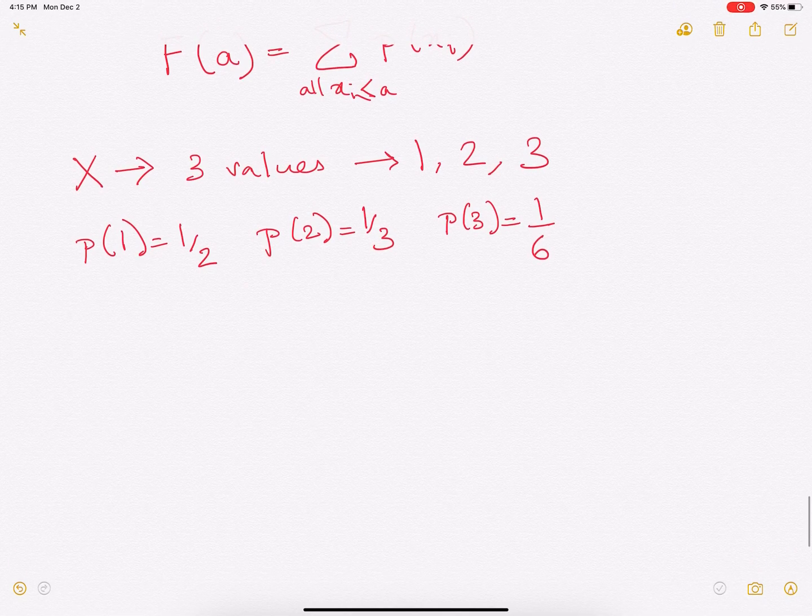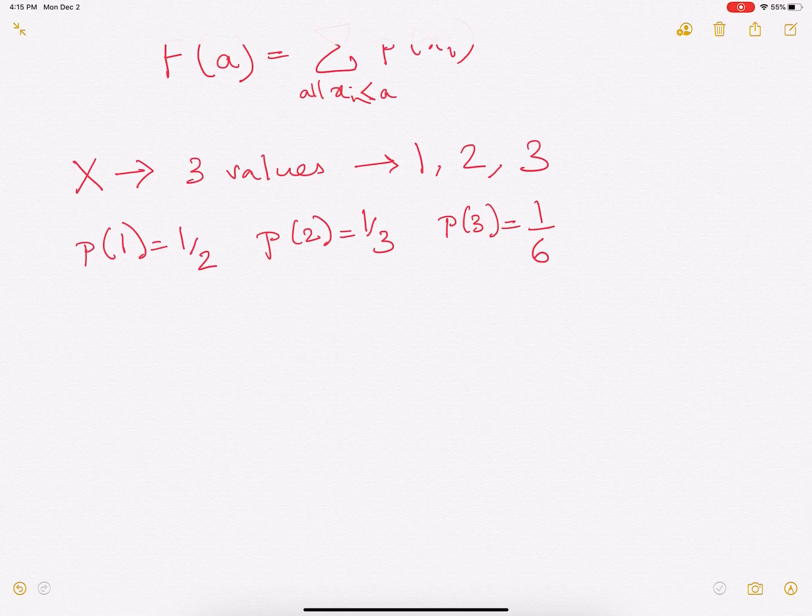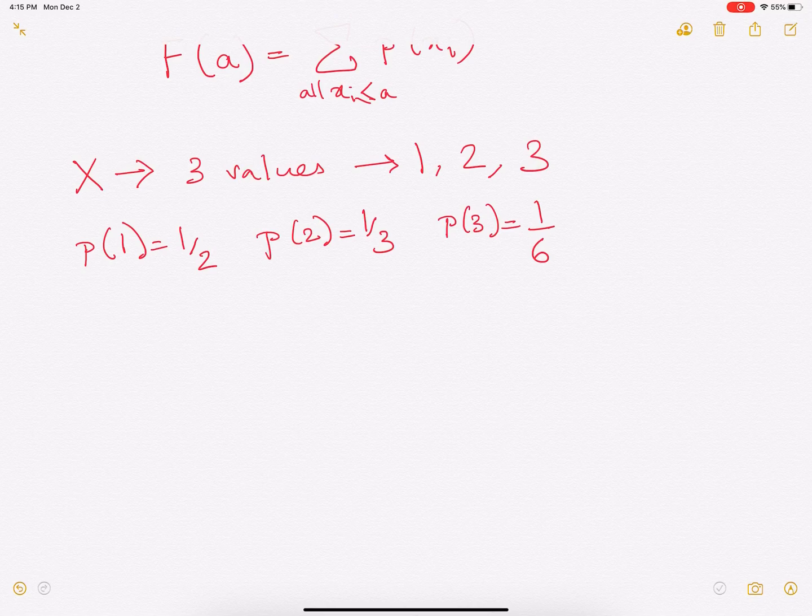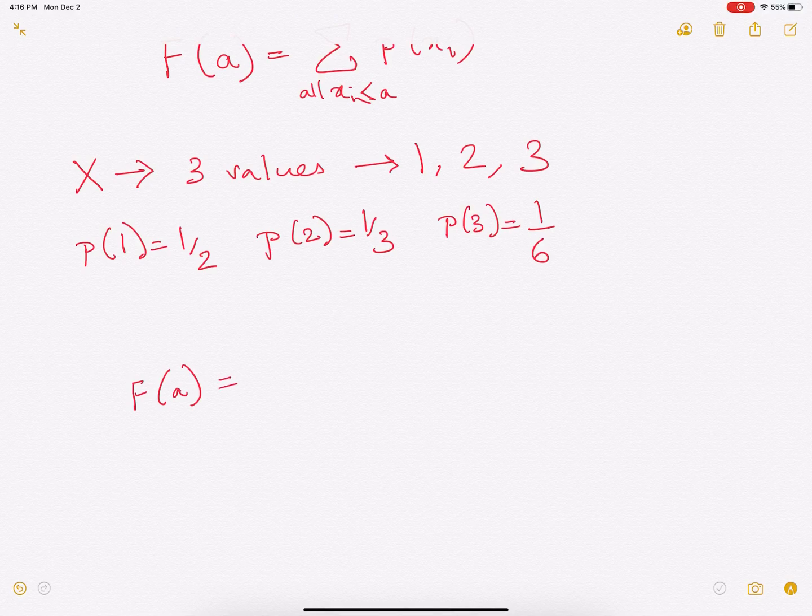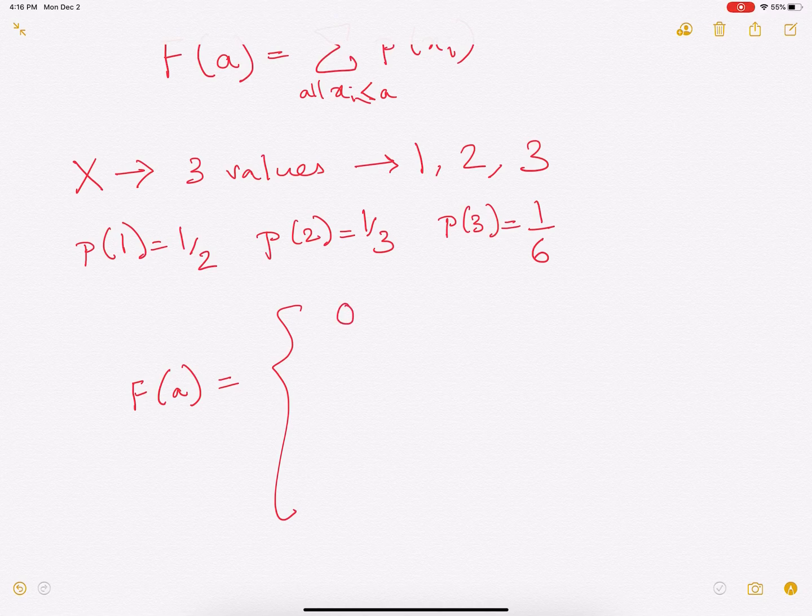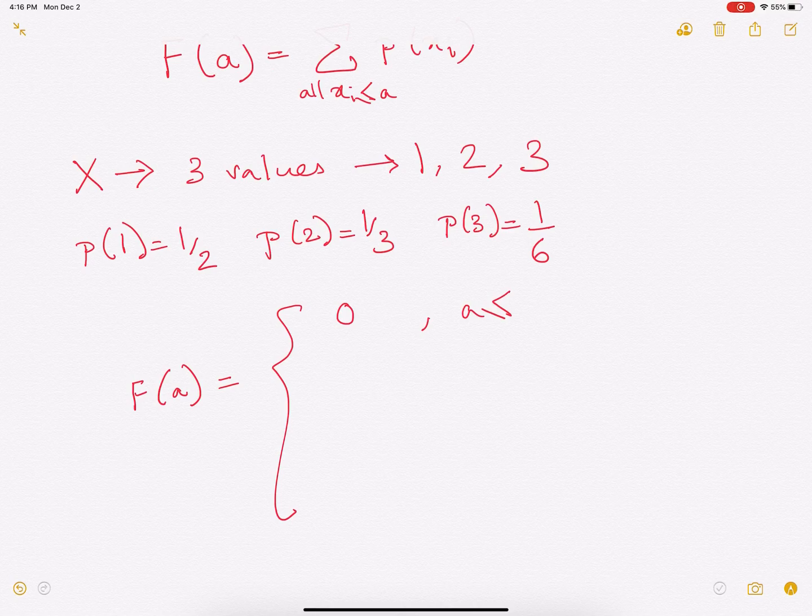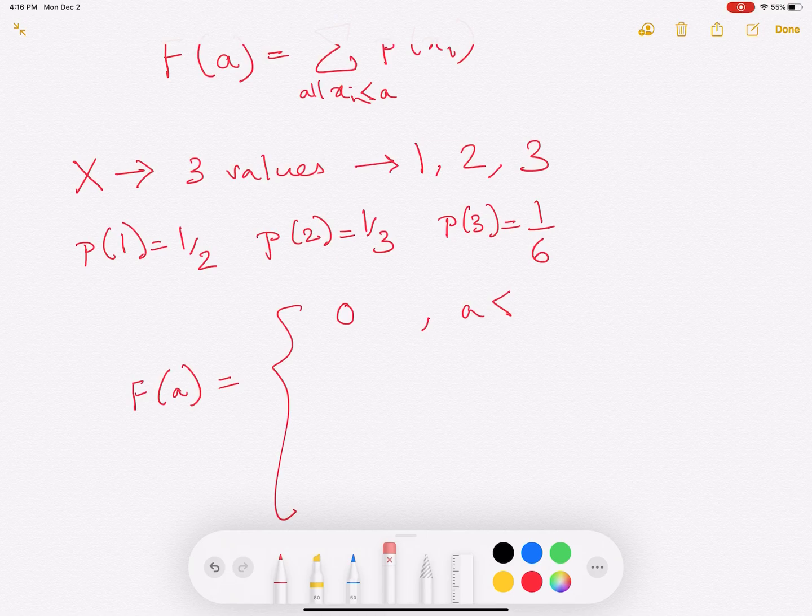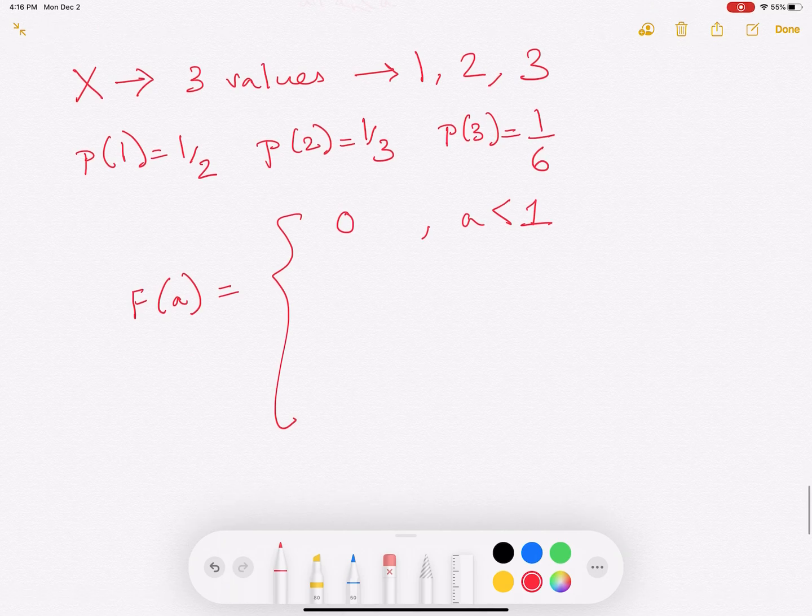So now, if we want to draw or determine the cumulative distribution or CDF, so F of A can be written in this form. It will be given by 0 when A is less than 1. So for A less than 1, it will be equal to 0.